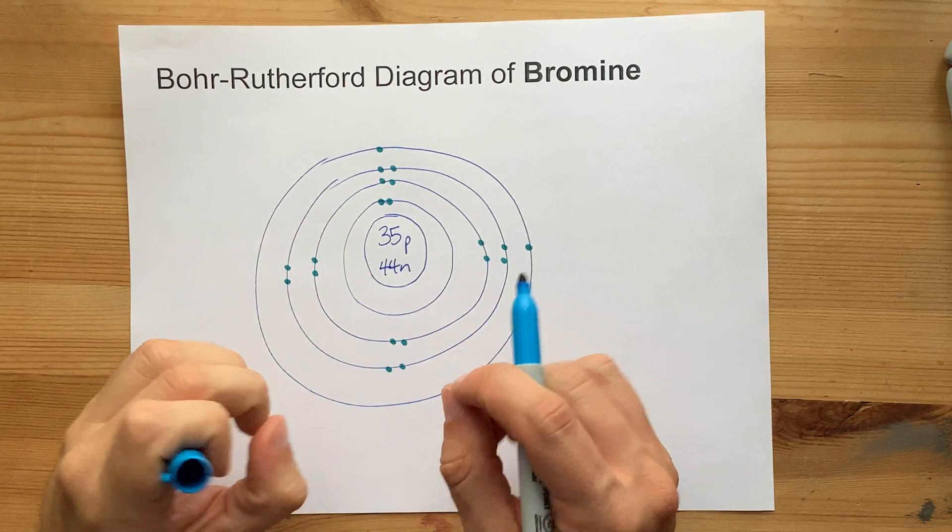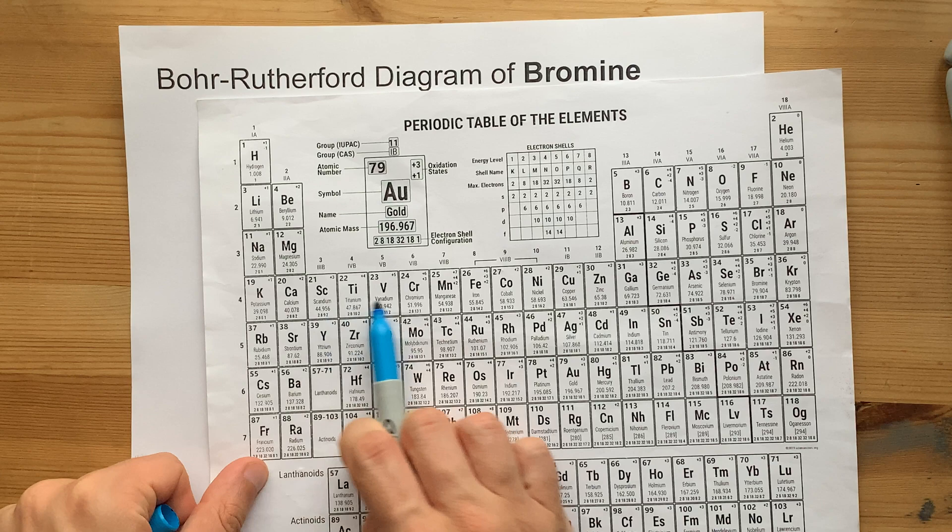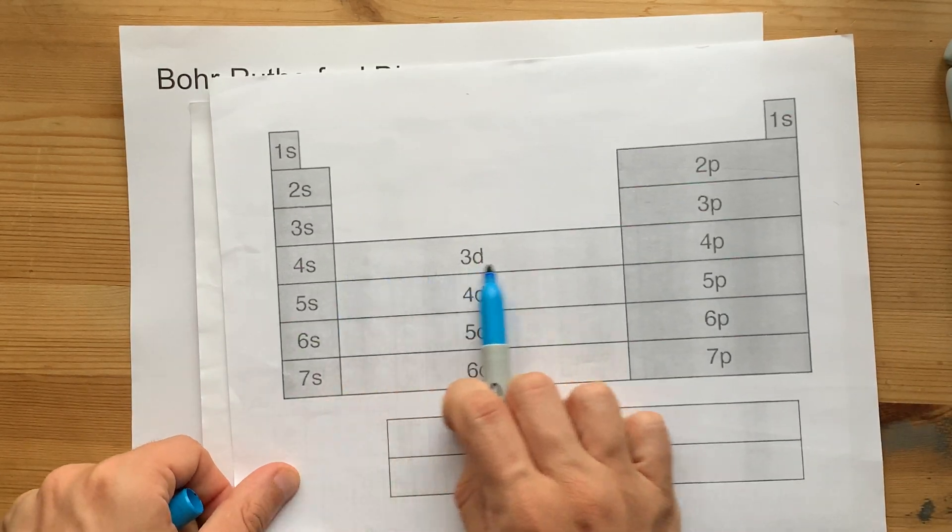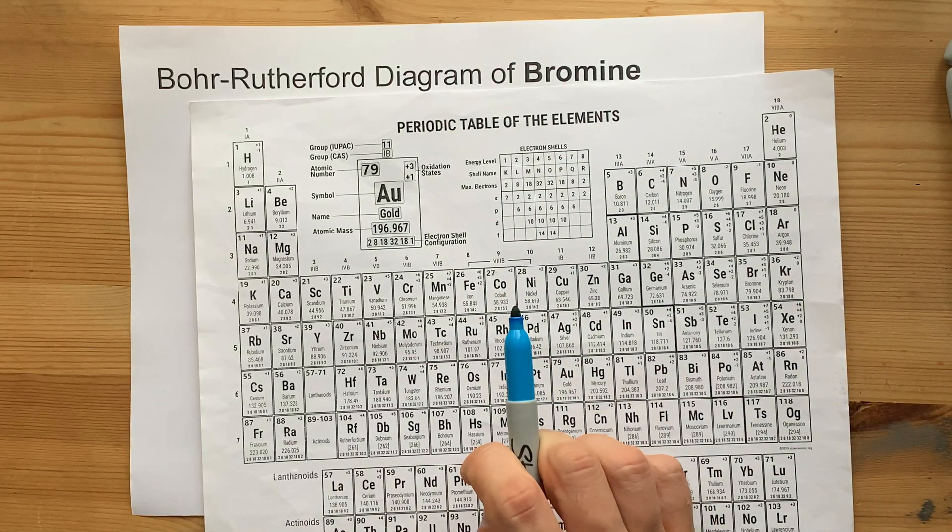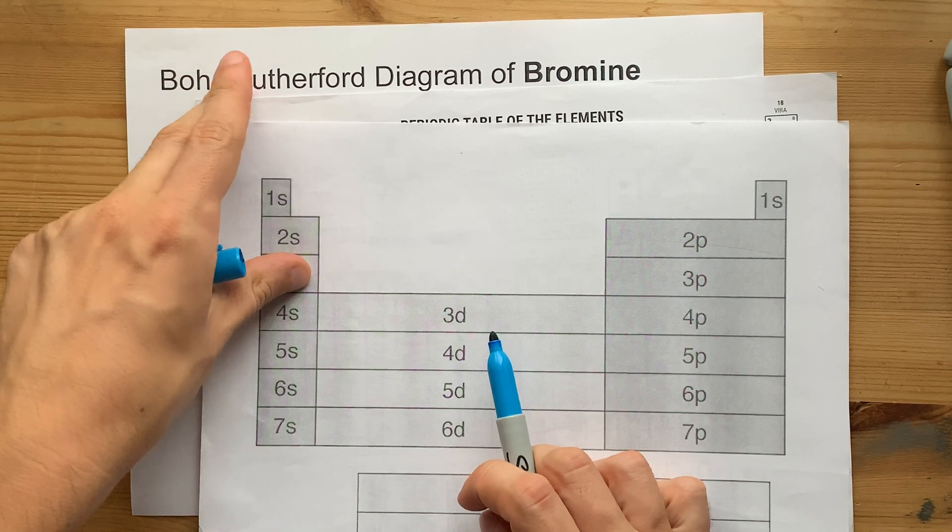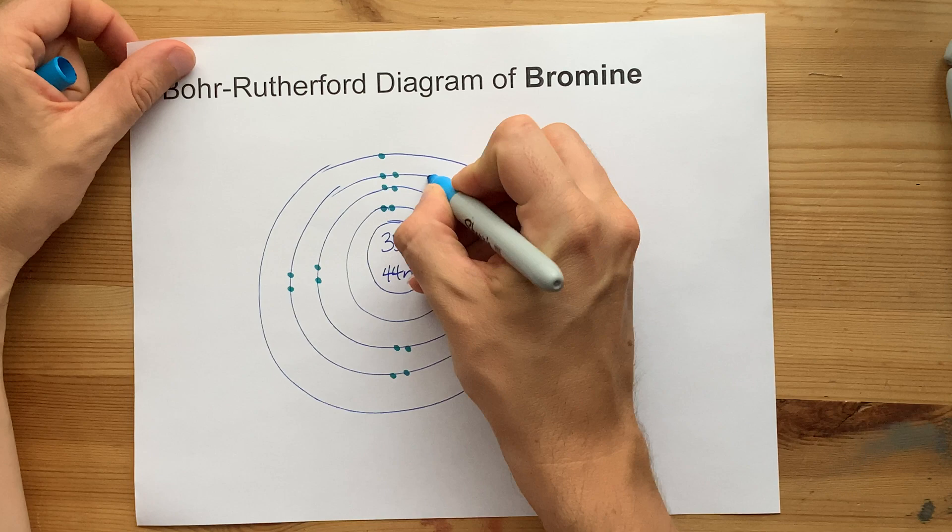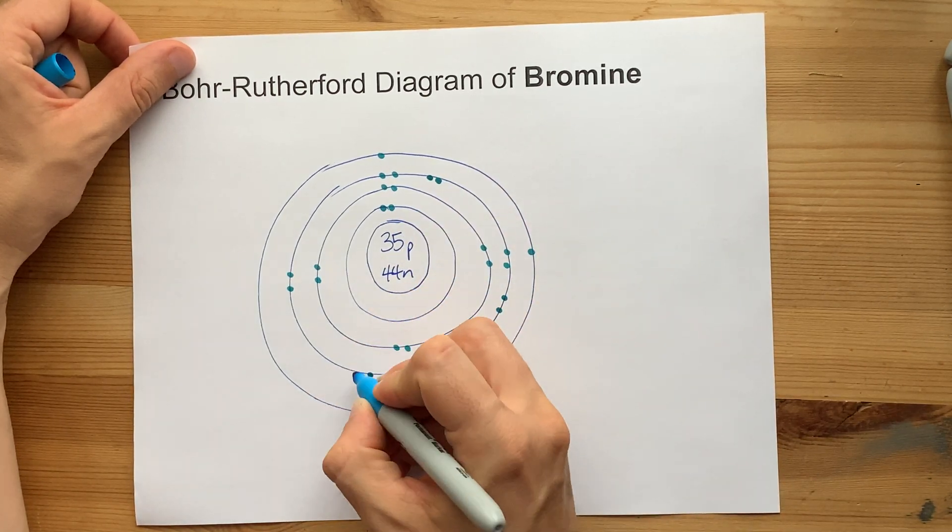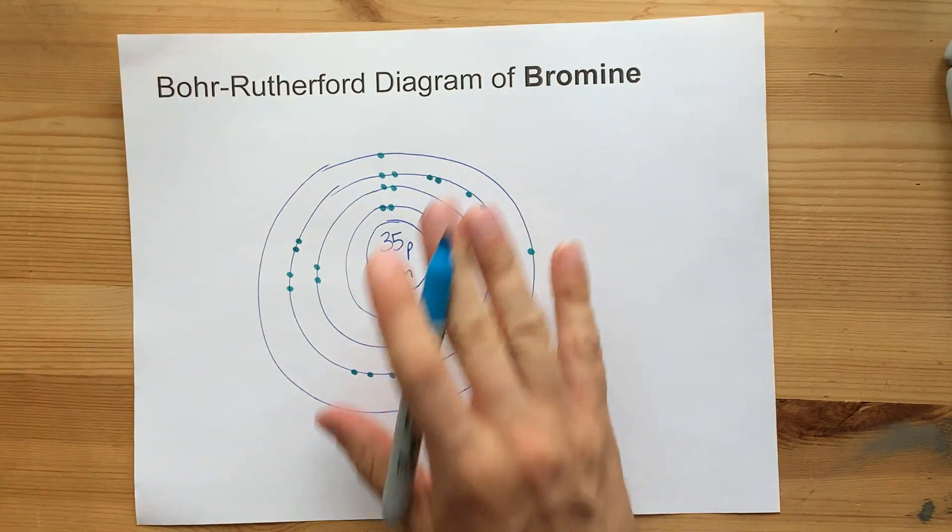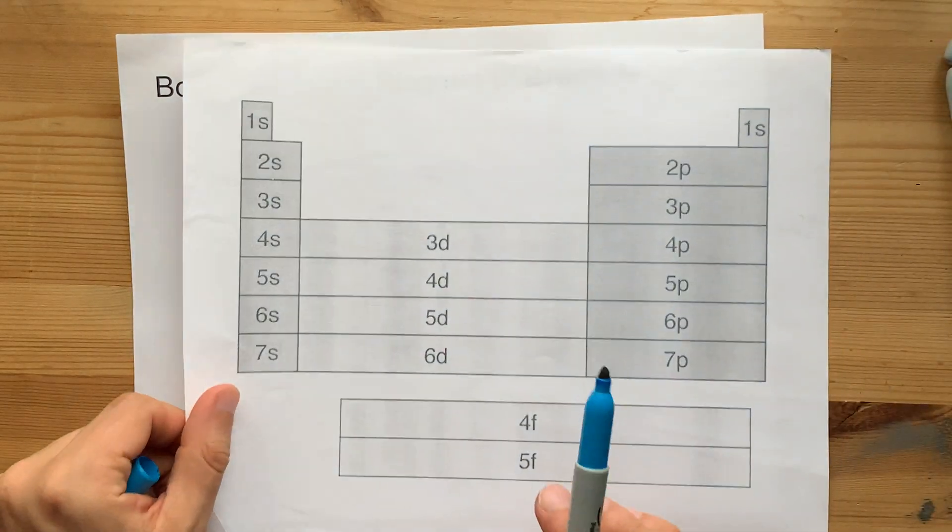But where do the next electrons go? According to this chart, the next 10 all go into the third shell. See, it's 10 wide. 10 electrons go into the third shell. The third shell actually holds 18 electrons. So let's add 1, 2, 3, 4, 5, 6, 7, 8, 9, 10 electrons to the third shell. That's now 18 dots on the third shell here.